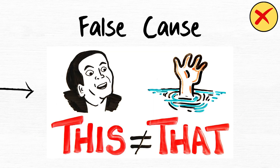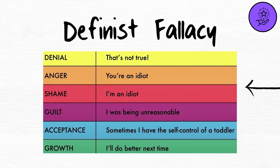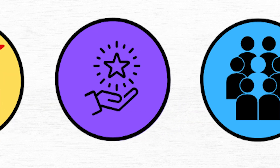False cause. The false cause fallacy assumes causation from correlation. Definous fallacy. The definous fallacy defines terms to favor one's position.